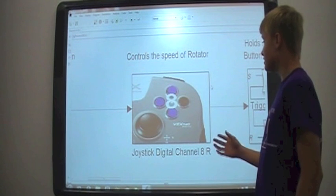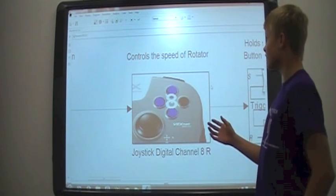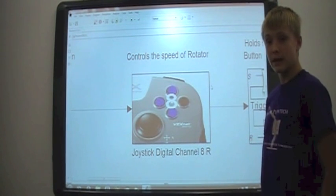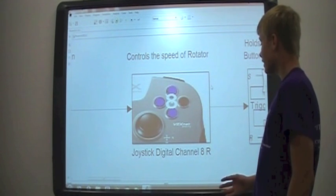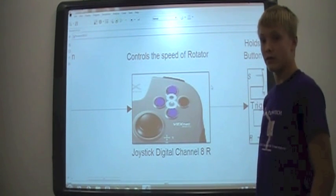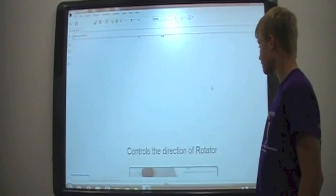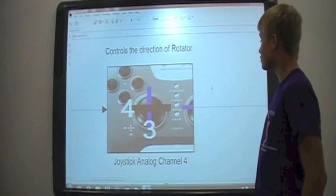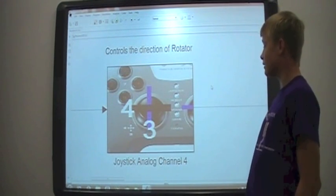Now this button is digital A right and this controls the speed of the rotating base on our robot. The latch programming and the MATLAB function are identical to the one you see above. And this controls the direction of the rotating base of our robot.